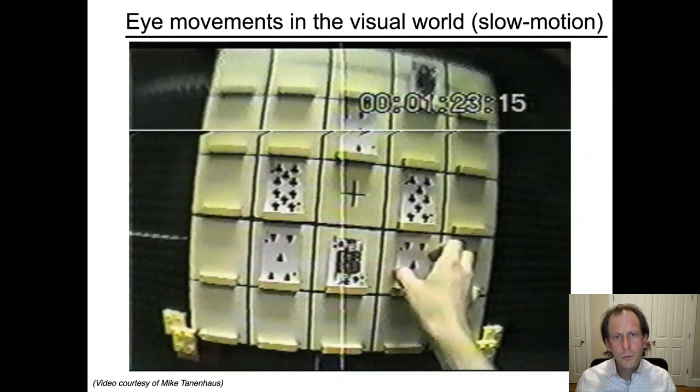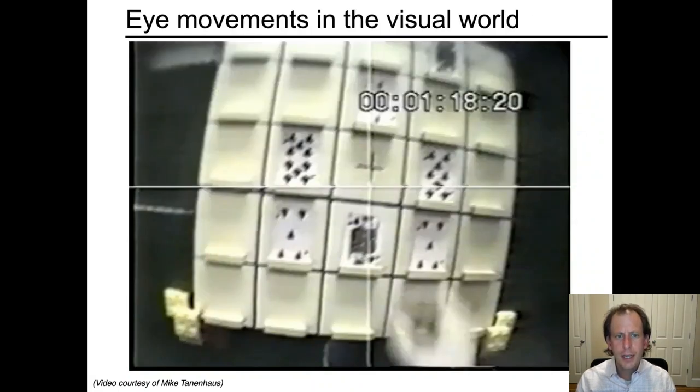Now I'm going to play it for you one more time in fast speed, and what I want you to notice is that the person actually is looking up to the club card above the five of hearts that they're looking at before they even hear 'clubs.' So it's going to be an eye movement to this card right there, and go ahead and watch that.